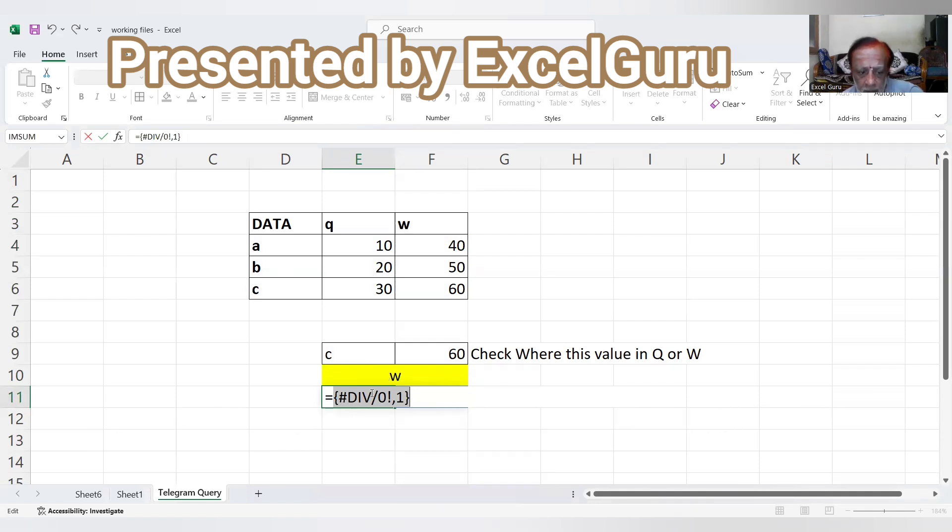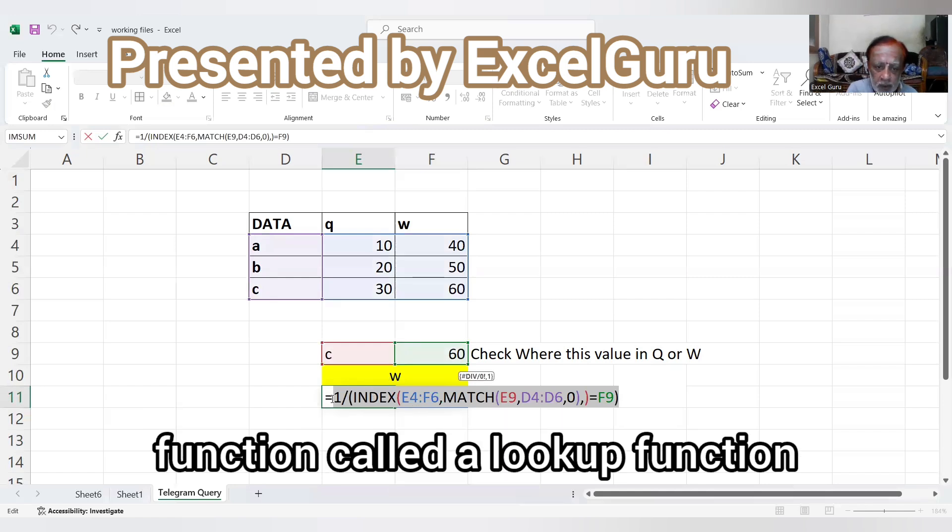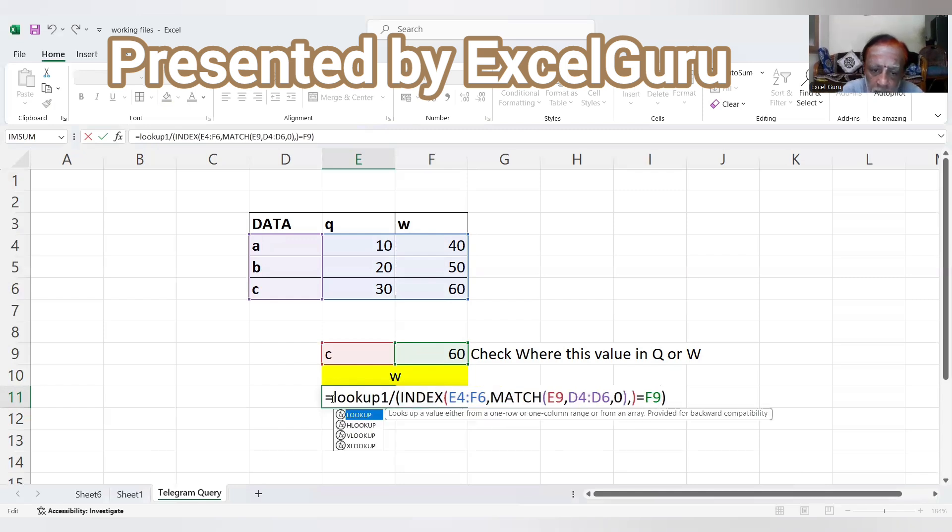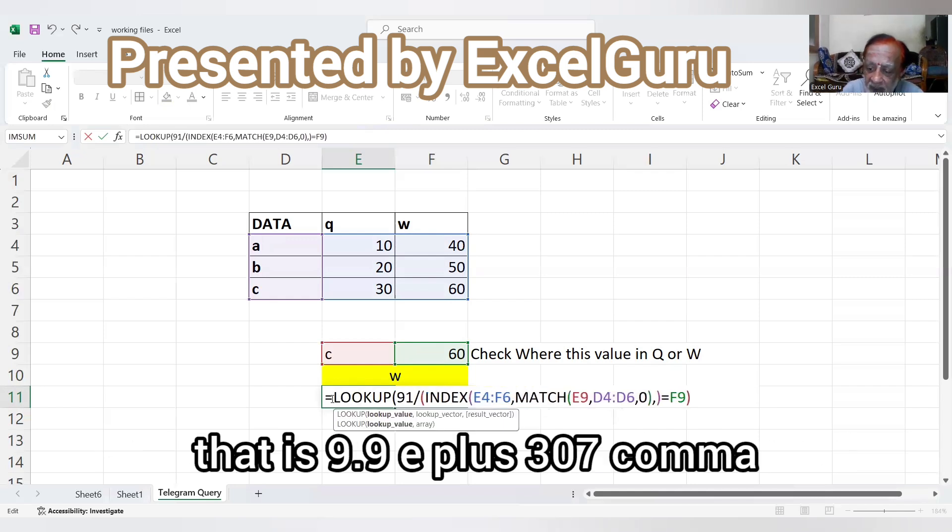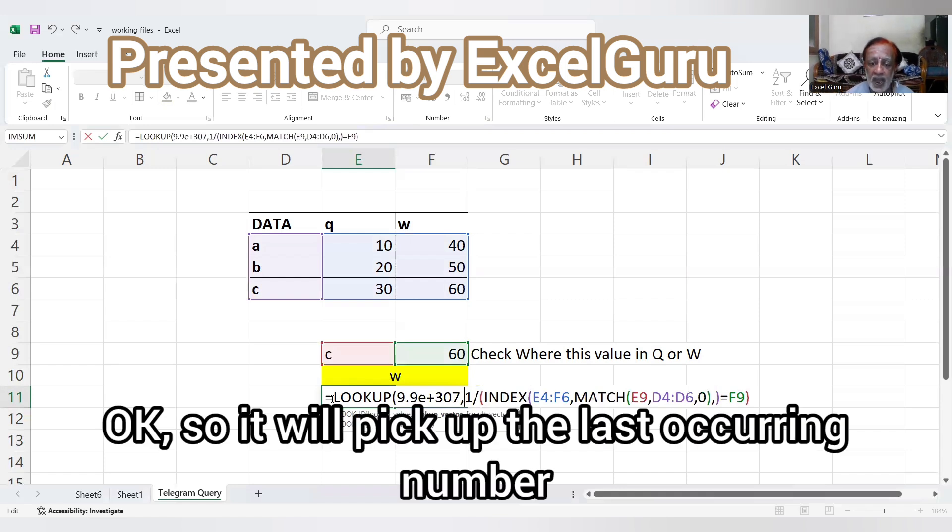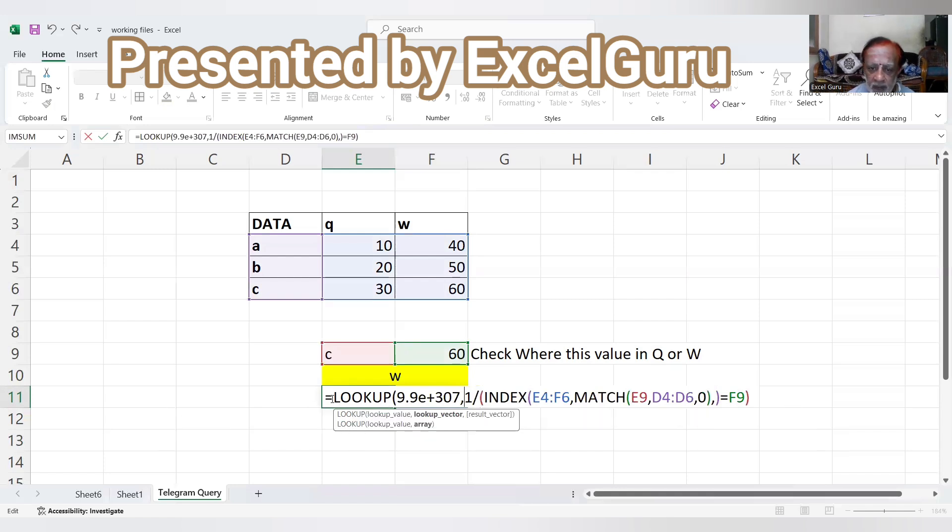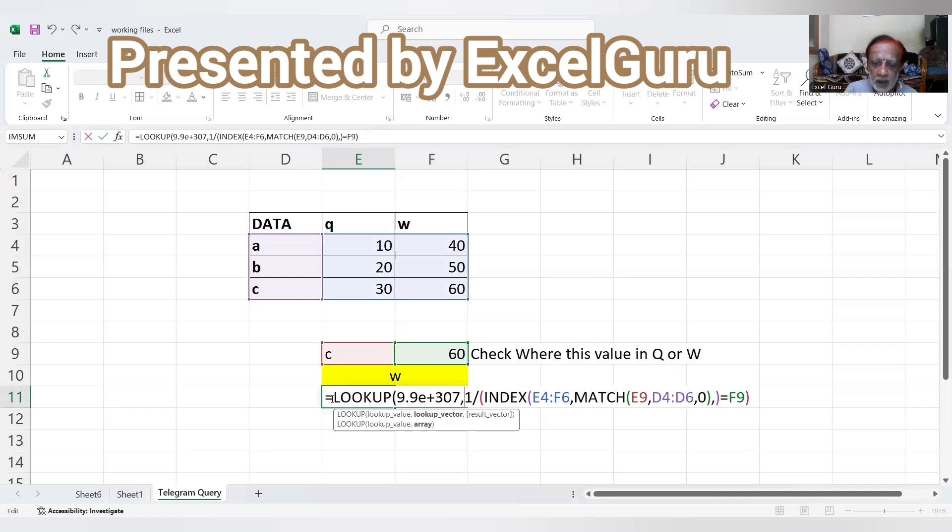So we are interested in that one, right? So here I am going to use the amazing function called the LOOKUP function to look up a maximum number in Excel, that is 9.9E plus 307, comma. So it will pick up the last occurring number, whatever it may be.